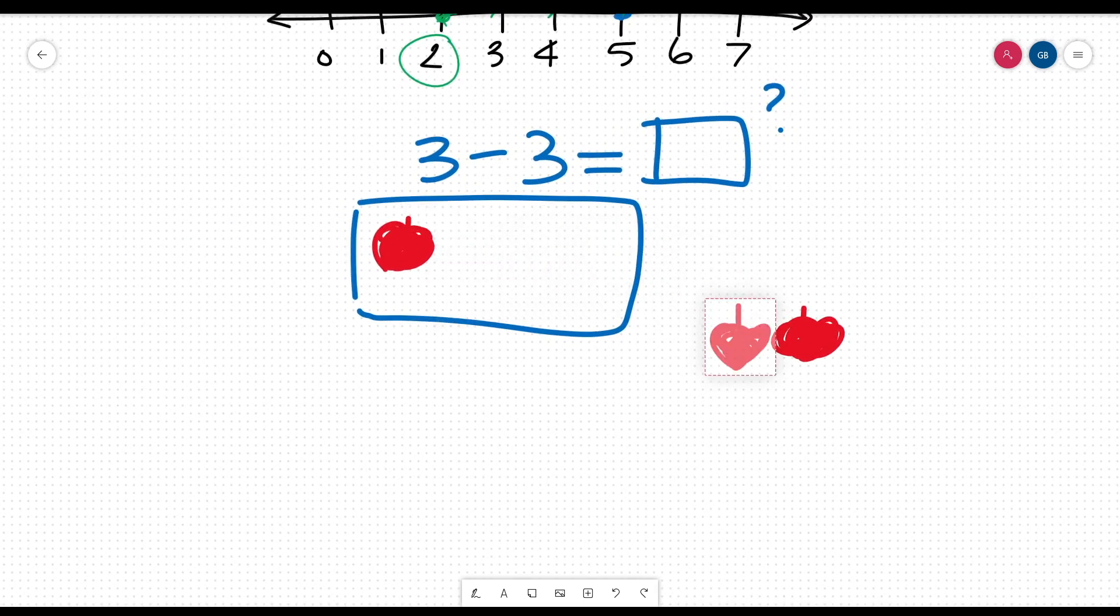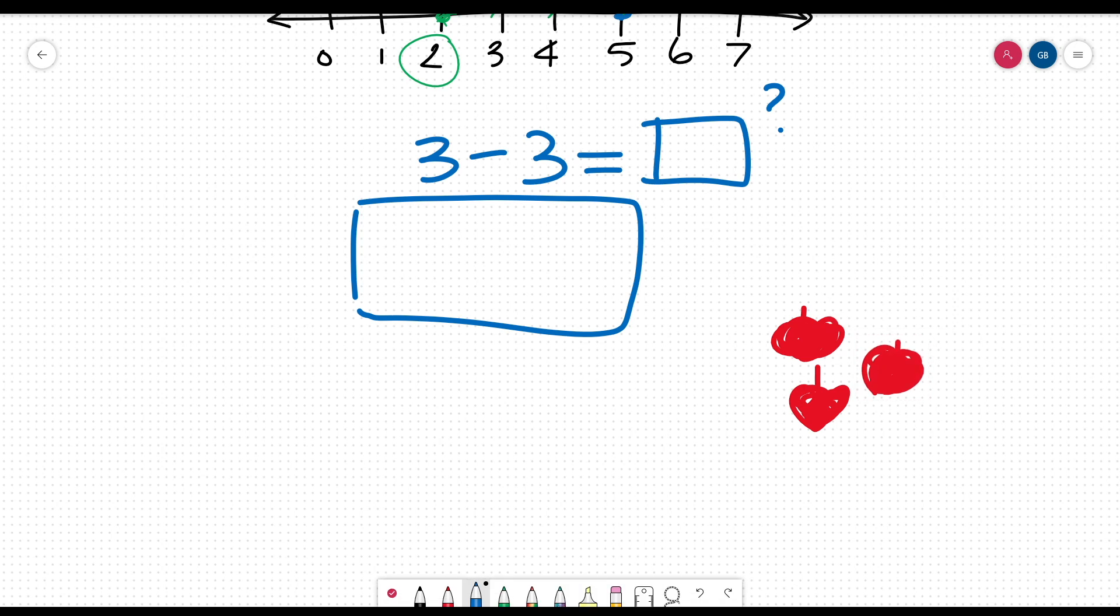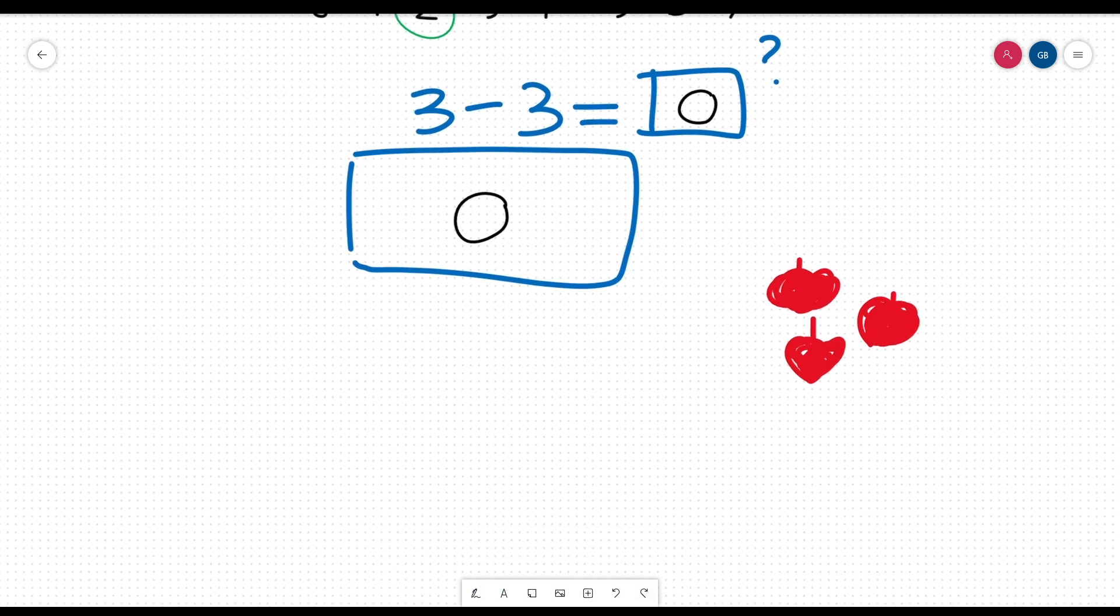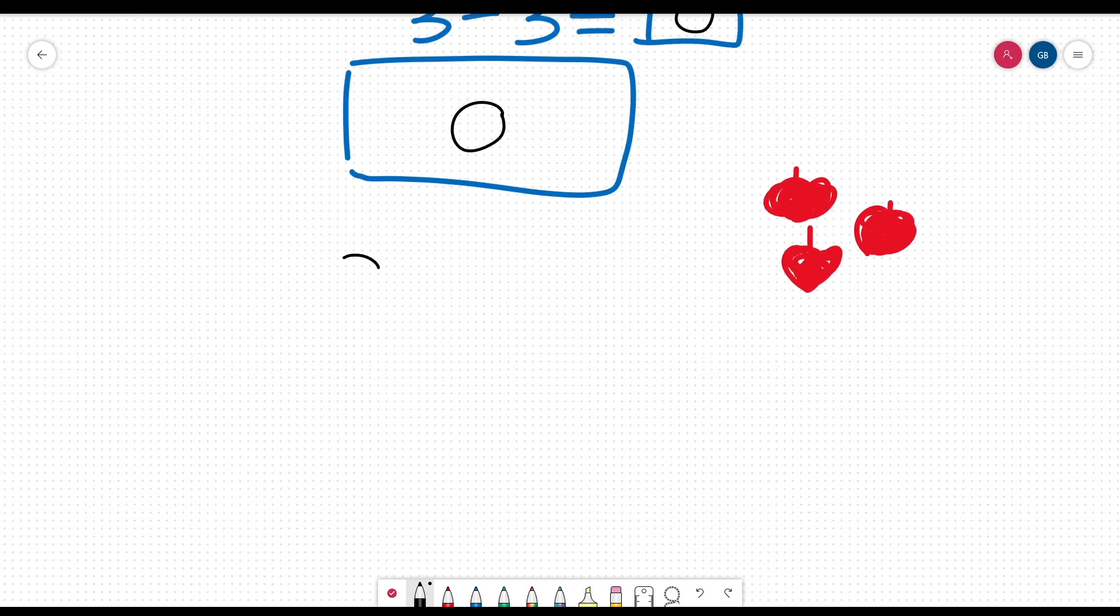1, 2, 3. You can see that you have no apples left. That means the answer is 0. A good trick to learn is that when the two numbers in a subtraction problem are the same, the answer is always 0.